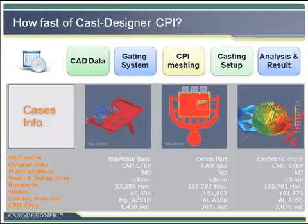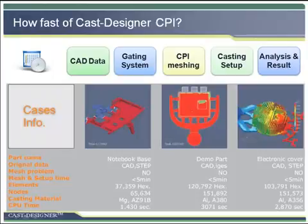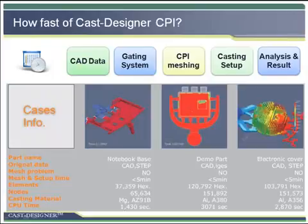For the right example, it is a machinery part in aluminum with many ribs on the part, so the meshing is critical and not simple in the standard way. However, Cast Designer still finished it within 5 minutes. The model has around 100,000 elements and 151,000 nodes, and the total simulation time is also only 50 minutes.